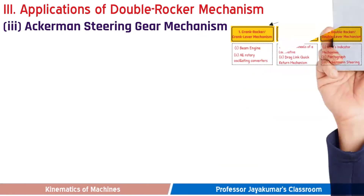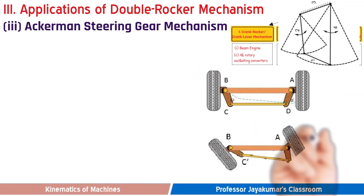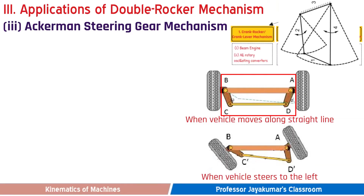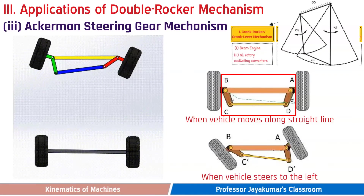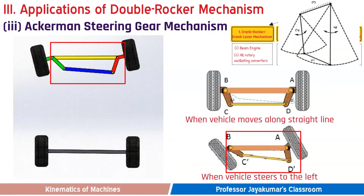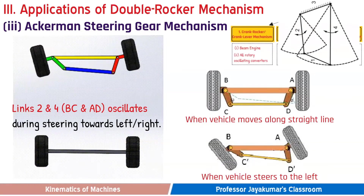The final application is Ackermann steering gear mechanism, which is also based on the double rocker mechanism concept. The diagram shows the front wheels of an automobile when the vehicle moves along a straight line and when the vehicle steers to the left. You can see the 4-bar mechanism ABCD, wherein link AB is greater than link CD, whereas links BC and AD are equal in length. When the vehicle moves along a straight line, links AB and CD are not parallel. Links BC and AD oscillate during steering towards left or right, hence it comes under double rocker mechanism.